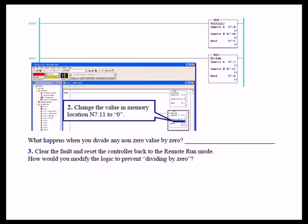We wanted to remind you of a characteristic of a programmable logic controller that's not true when you do math on paper. We know that if you divide any value by zero the result is infinity. However, we cannot represent a value any larger than 32,767. So in a PLC, what happens when you divide any non-zero value by zero? It equals infinity and faults the processor. So we had to clear the fault, reset the controller back to the remote run mode, and ask you how would you modify the logic to prevent dividing by zero?